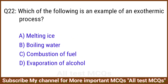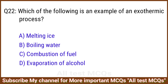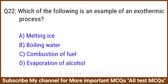Q22. Which of the following is an example of an exothermic process? The right answer is option C: Combustion of fuel.